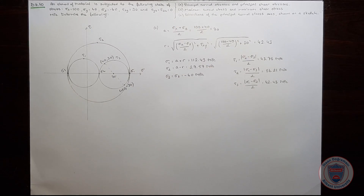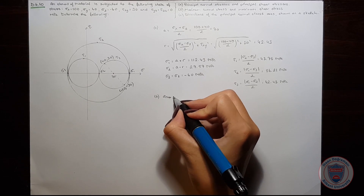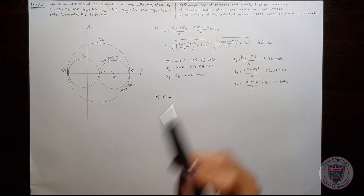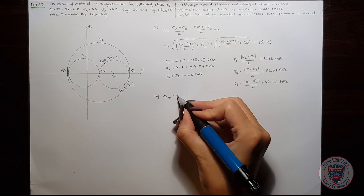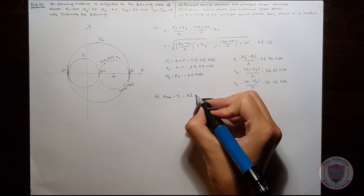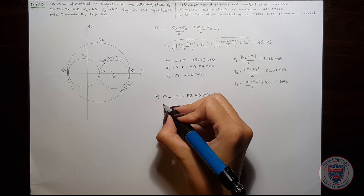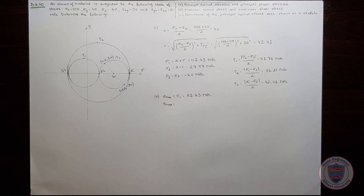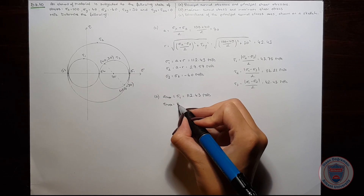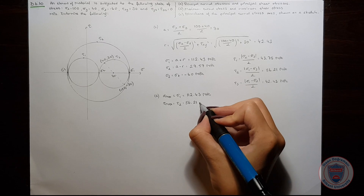We are done with Part A. Now we should find the maximum normal stress and the maximum shear stress. We know that our maximum normal stress is sigma 1, so sigma maximum is equal to 112.43 MPa. And our tau max will be equal to tau 2, which is 86.21 MPa.